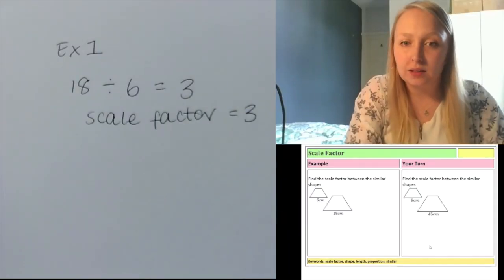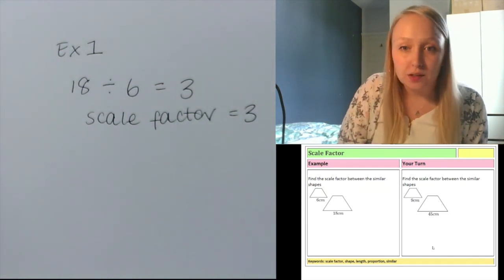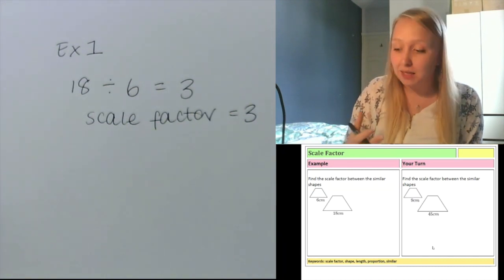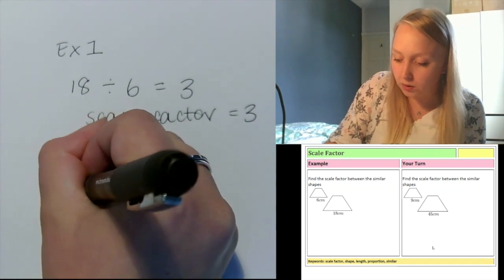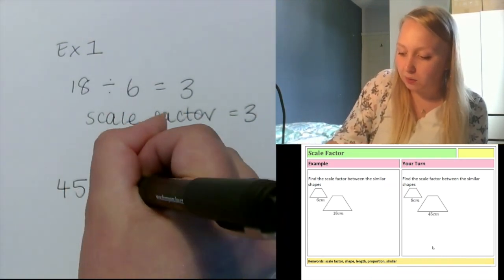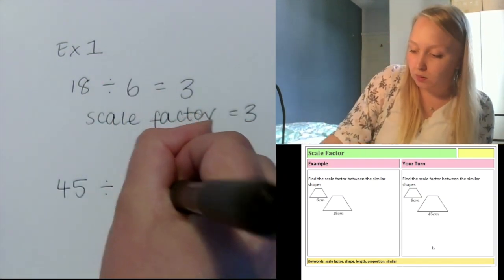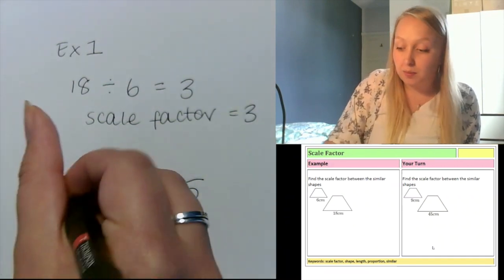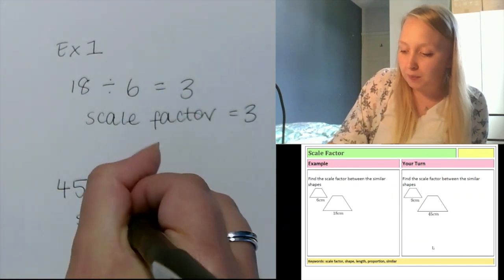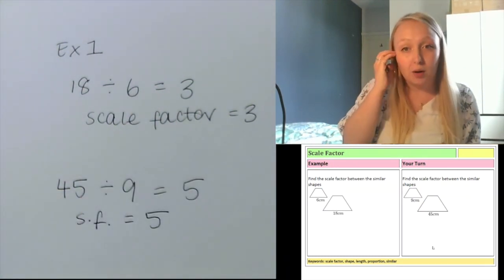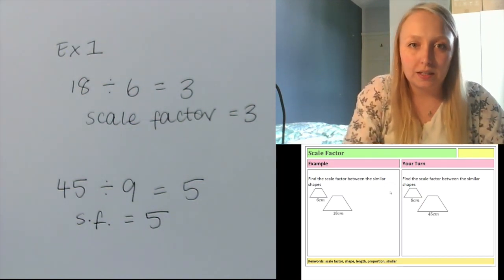Let's have a look at the answer to that question. Two trapezia again and the lengths are 9 and 45, so I want to know how many times longer those sides are than they are of the small one. I do my division: 45 divided by 9, and that gives me 5. That tells me my scale factor — SF is 5. It means the lengths of the big shape are 5 times longer than the lengths of the small shape. Let's check our answers.